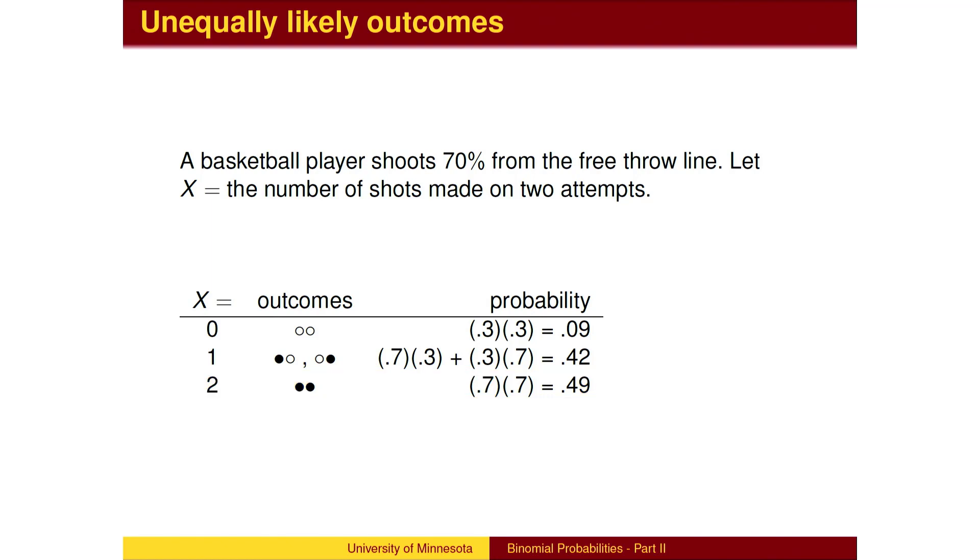Notice that Pascal's triangle still appears. The number of strings of free throws for 0, 1, and 2 successes are 1, 2, and 1, respectively. These are the numbers in the second row of Pascal's triangle. The difference is that the probability of any given string depends on whether they are made free throws or missed free throws, since the underlying probabilities are different.